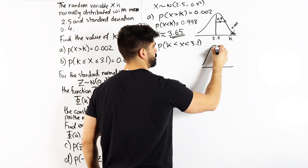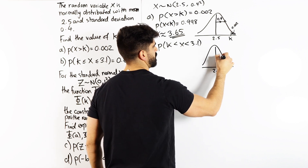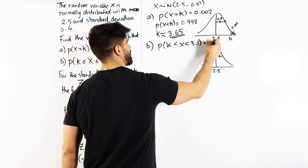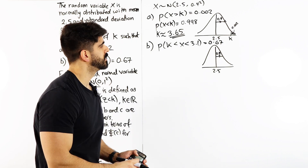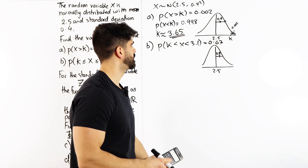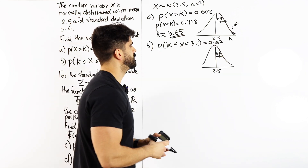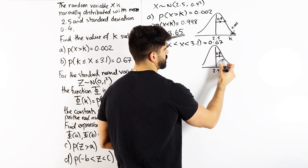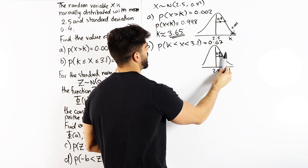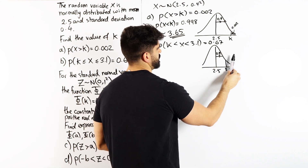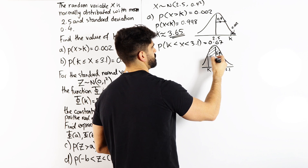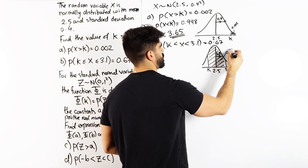New diagram. We have mean 2.5 and standard deviation 0.4. Because of symmetry, the distribution is split 50-50. Now 2.5 + 0.4 = 2.9, so 3.1 is somewhere over to the right. The area between that and some value of k is about 67%, so k must be somewhere to the left of the mean.